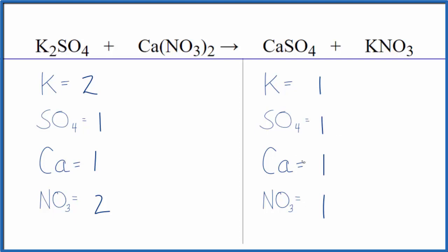So it looks like all I need to do is put a two here. One times two. That'll give me two potassium atoms. Those are balanced. One nitrate times two. Two nitrates. We're done. This equation is balanced.